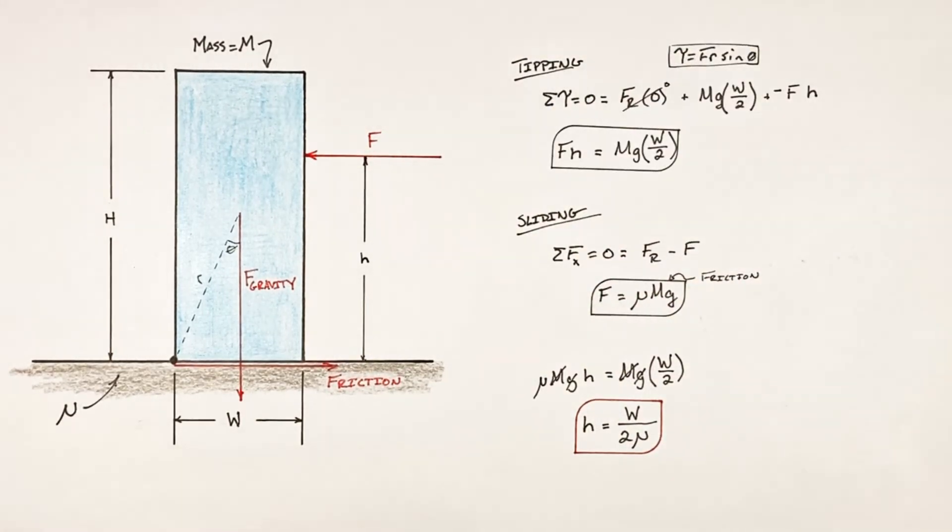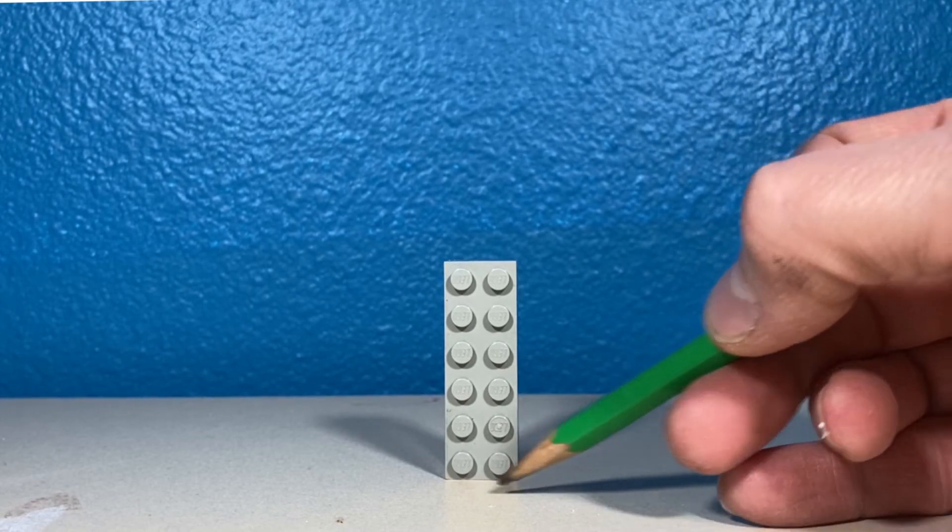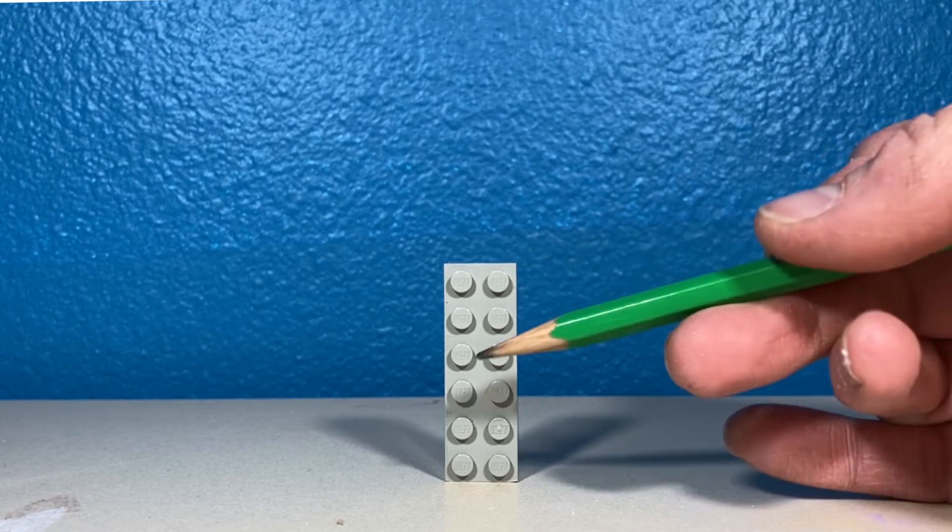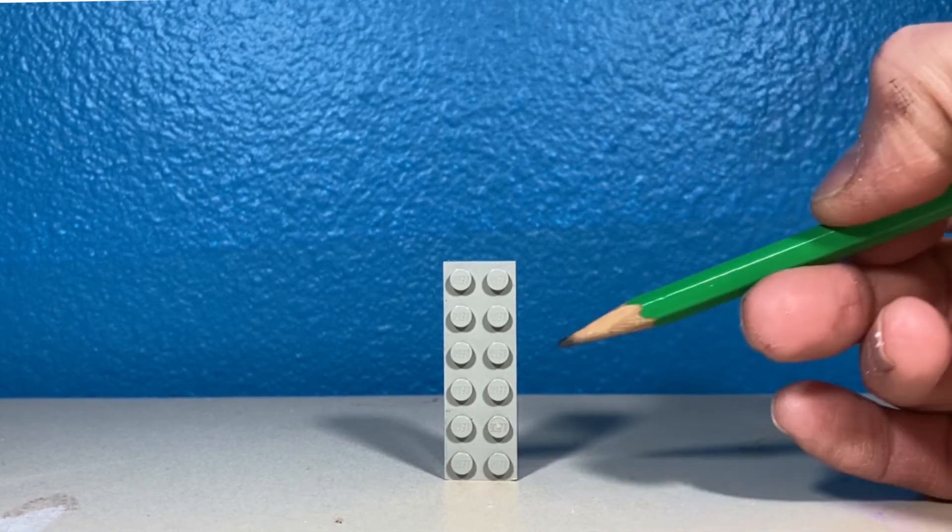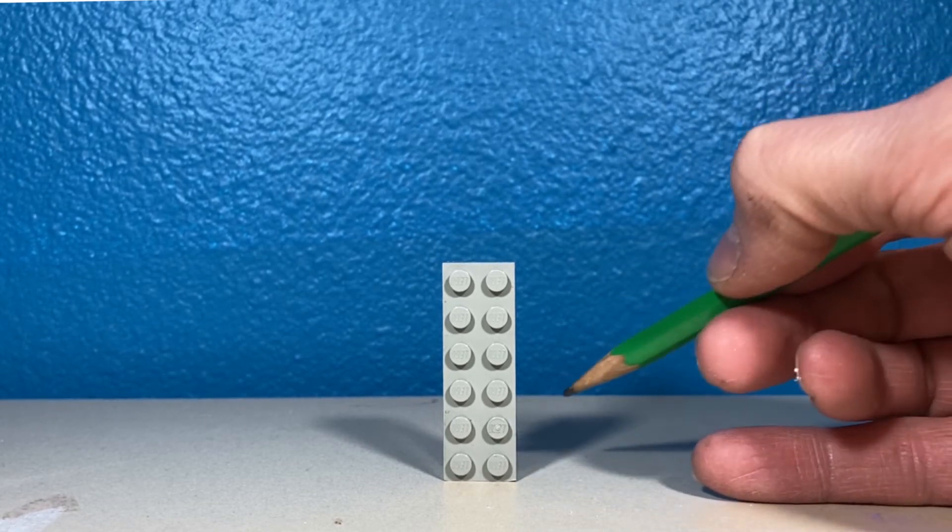All right YouTube, I want to talk about this result we've derived. You see, the result tells us that the width of the block matters and the height does not. Now it's easy enough to believe that the mass doesn't matter - we can see how that cancelled out - but the idea that the height of the block is irrelevant seems counterintuitive, so I'm going to prove it.